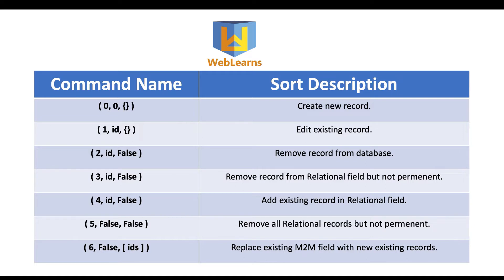Let's see how we can use these commands. For example, consider a sales order: sales.order is the parent model and sales.order.line is the child model. When creating a new sales order along with a few sales order lines, Odoo automatically uses the first command — command zero — to create the sub-model records.